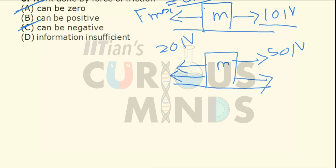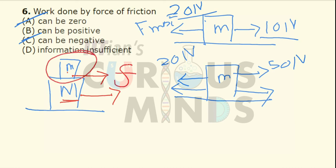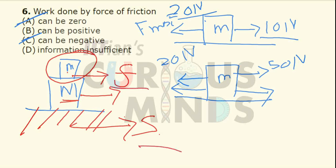Now let us see the third option. If I keep a block of mass m on top of another block of mass M, with friction between the two blocks, and I pull the larger block M to the right such that the friction force is enough that the small block m does not slide, then the frictional force on small block m acts in the right-hand side direction and m is also displaced to the right. Since the force and displacement are both in the same direction, the work done is positive. So options A, B, and C — all three are correct.